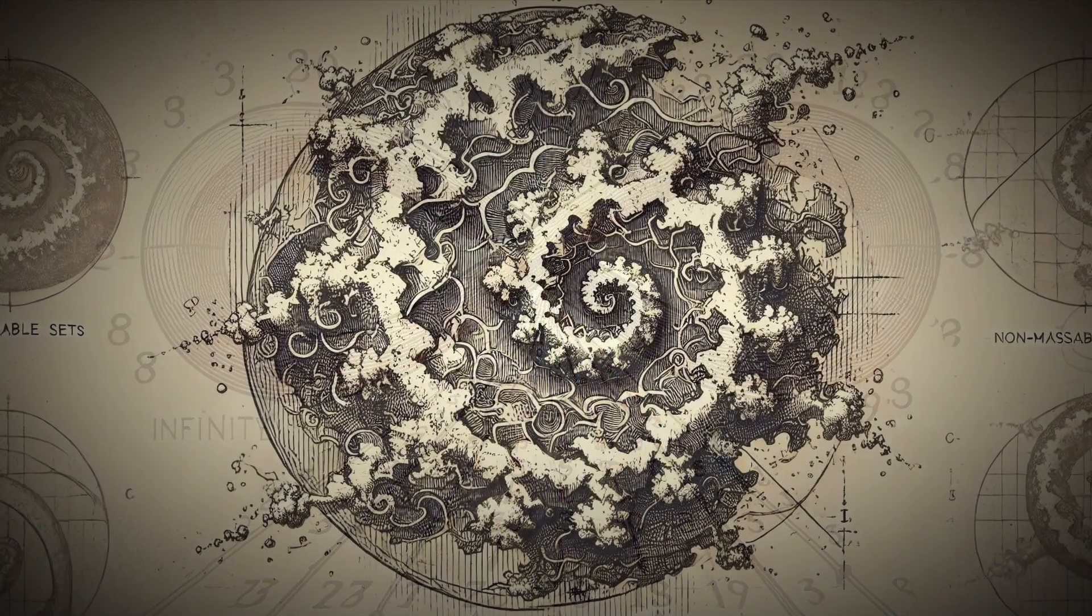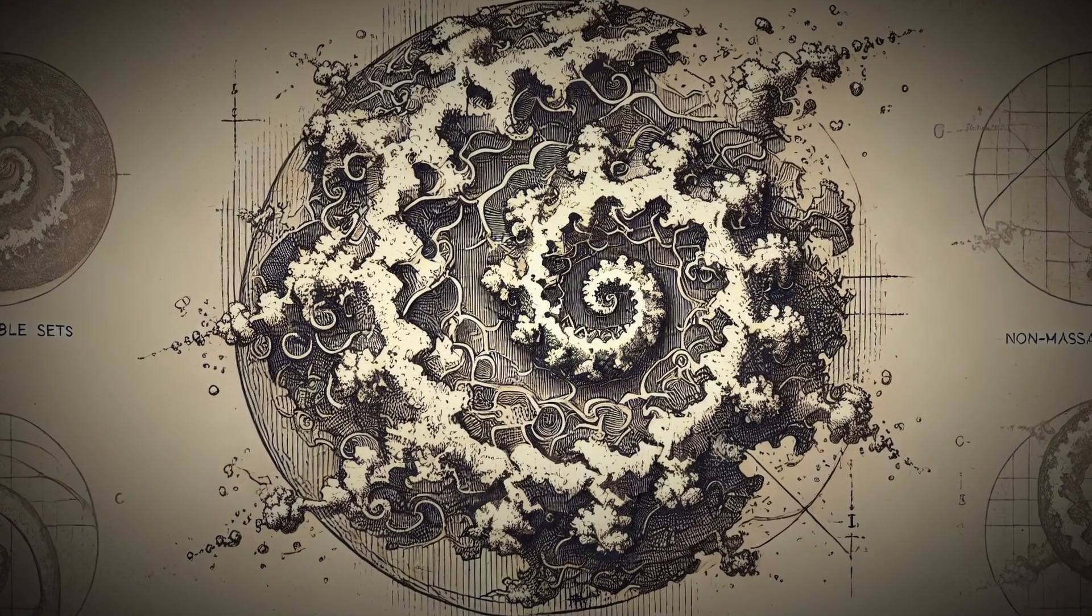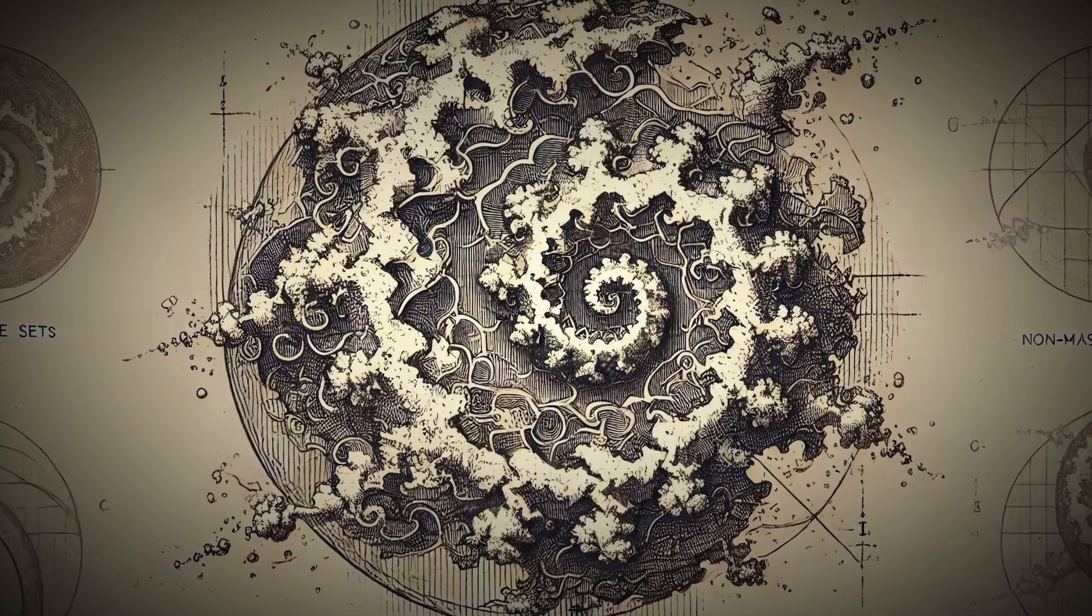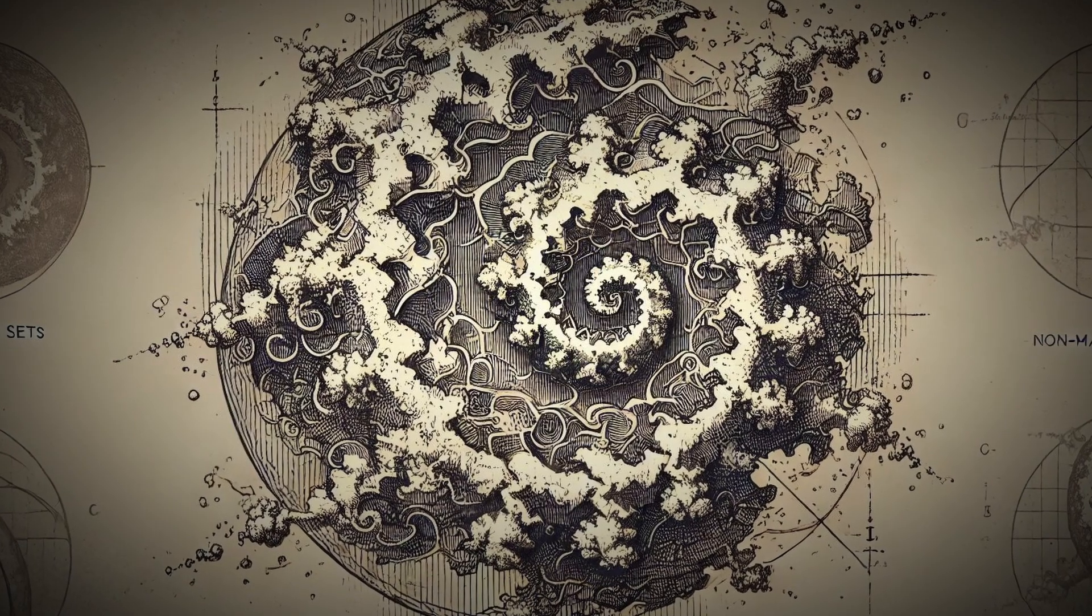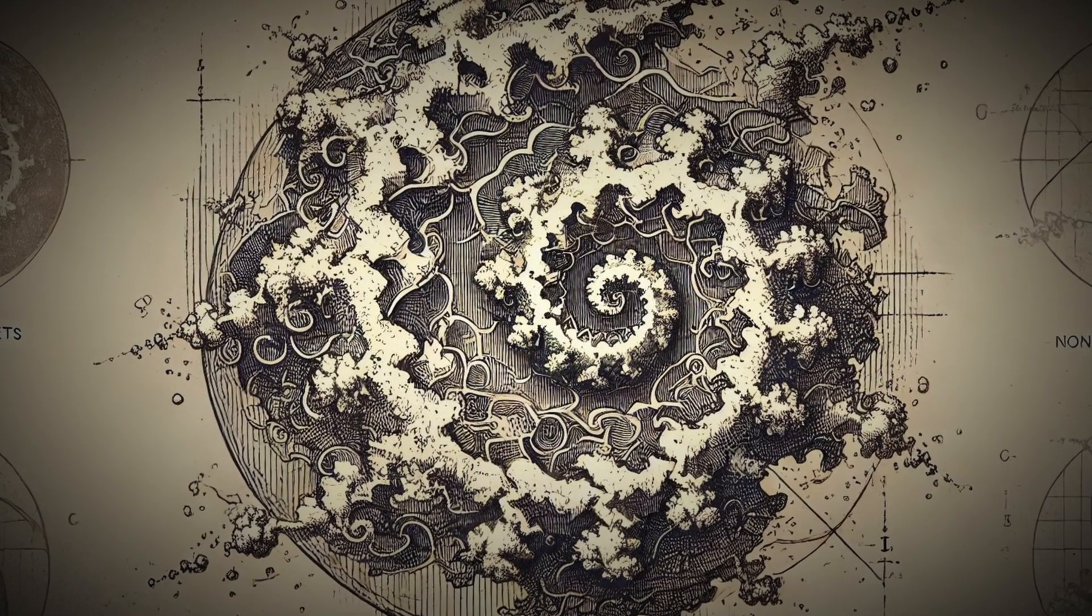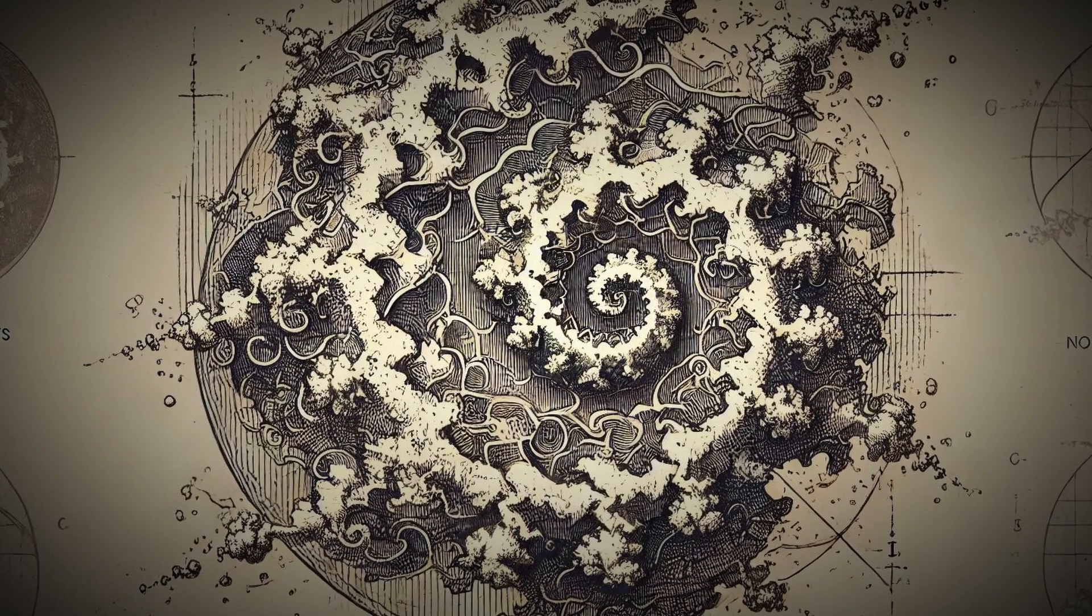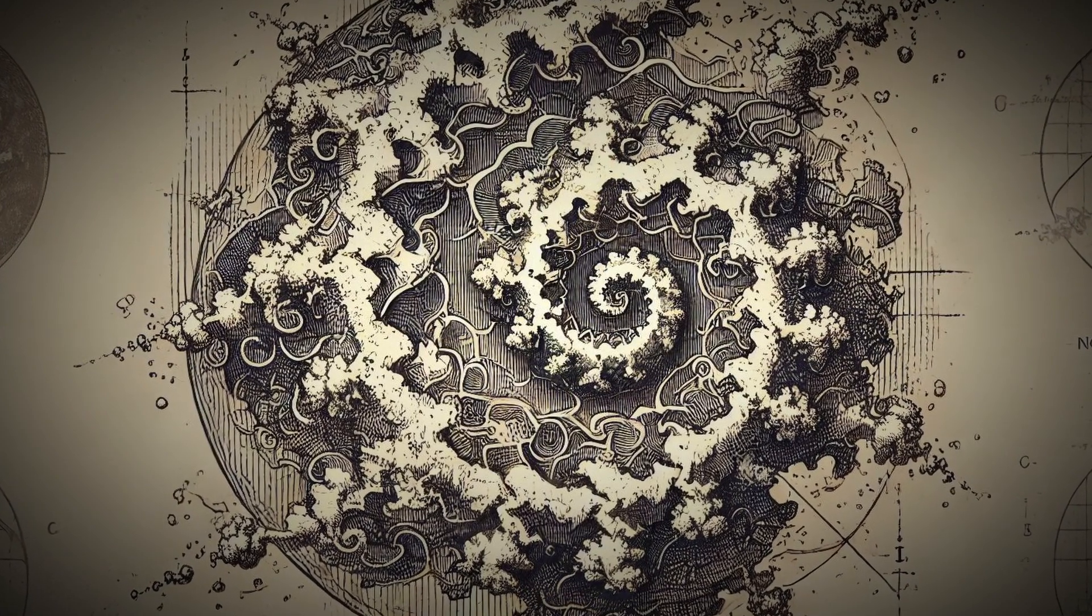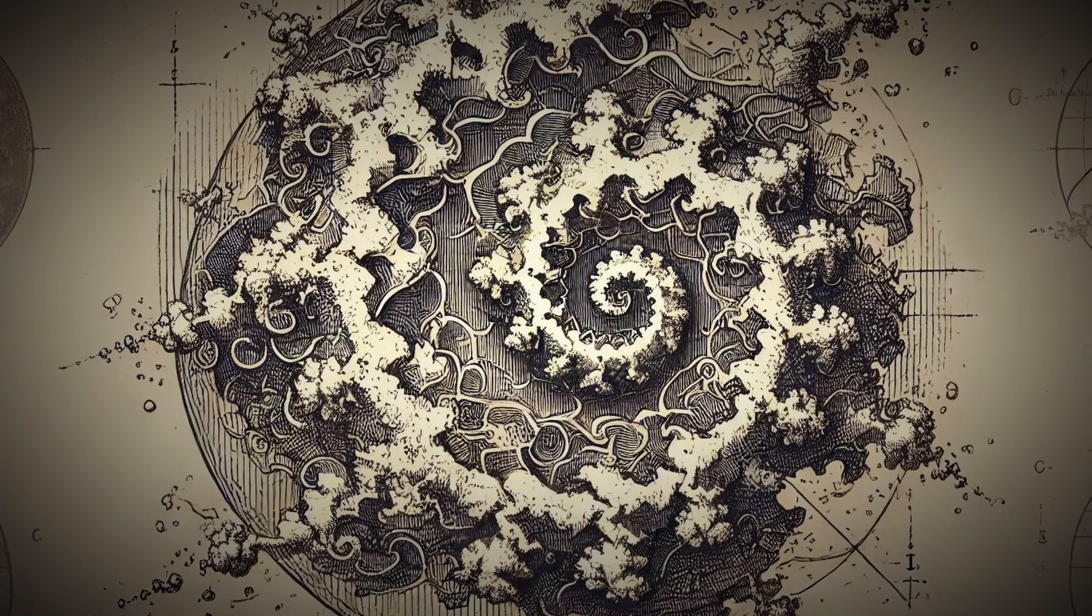Let's talk about the pieces that the sphere is split into. These aren't regular, measurable chunks that you could hold in your hand. They're called non-measurable sets, and they can't be assigned a traditional volume. If you think of a regular object, you can calculate its volume using mathematical formulas, but that doesn't work here.